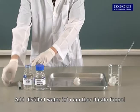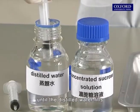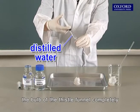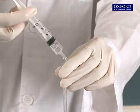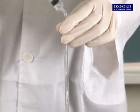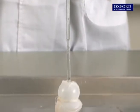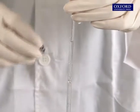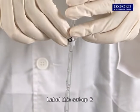Add distilled water into another thistle funnel until the distilled water fills the bulb of the thistle funnel completely. Label this setup B.